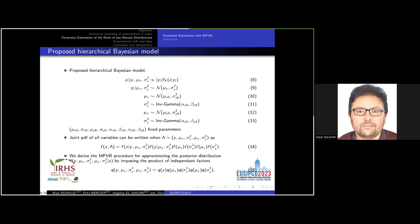We propose the following hierarchical Bayesian model to estimate our parameters. We consider that these parameters are random variables following normal and inverse gamma distributions. The joint PDF of all variables can be written by equation 14, and we apply the mean field variational Bayes procedure for approximating the posterior distribution by imposing the product of independent factors, as mentioned by equation 15.